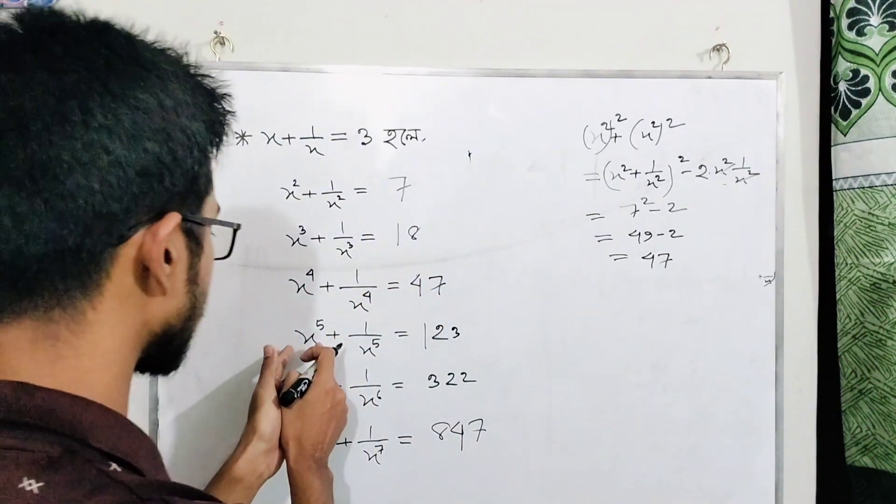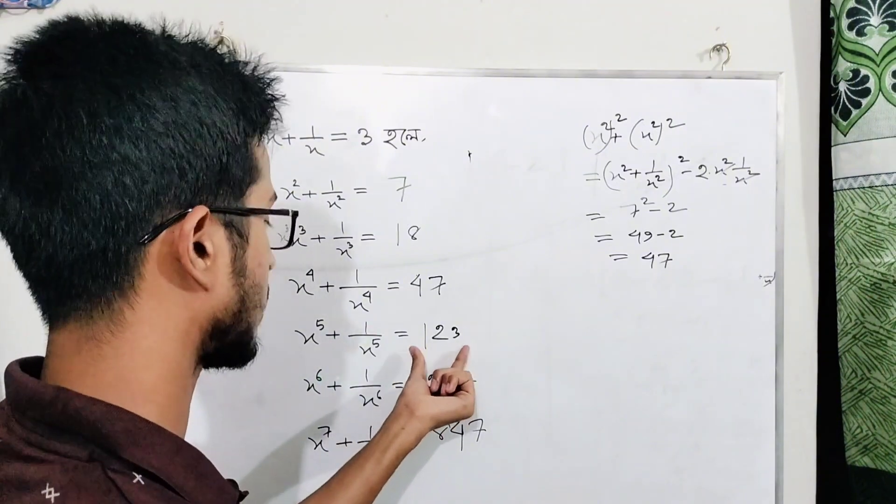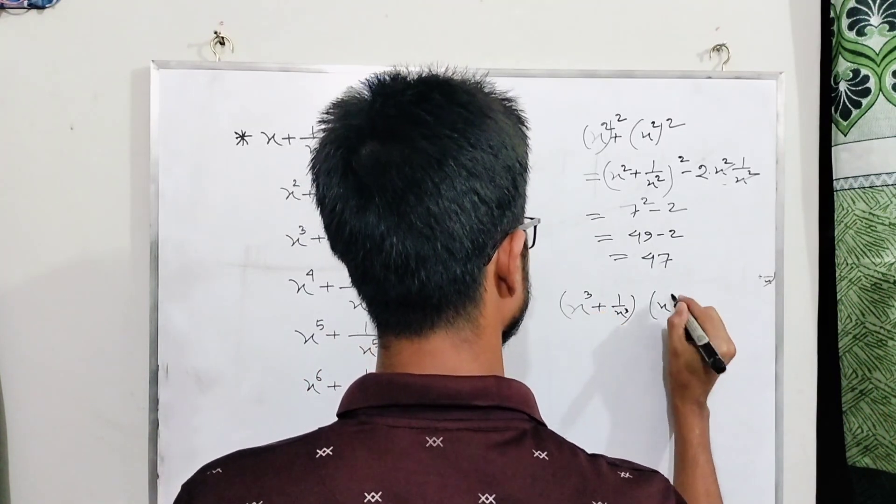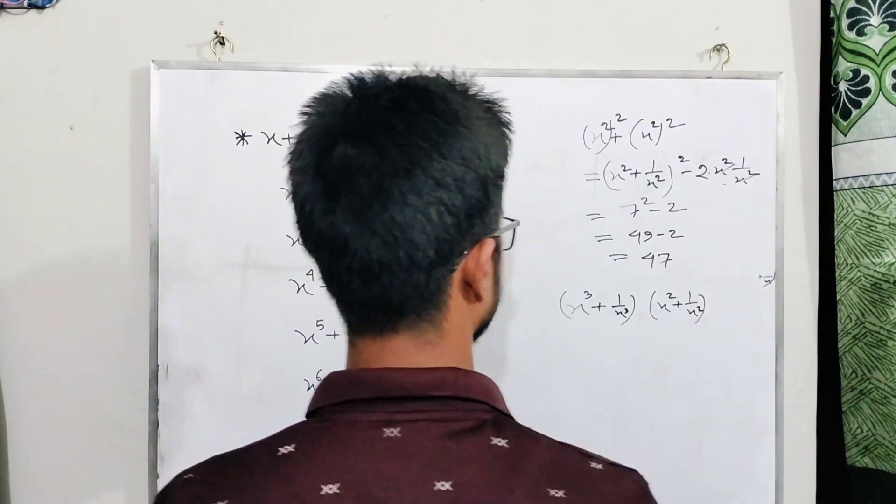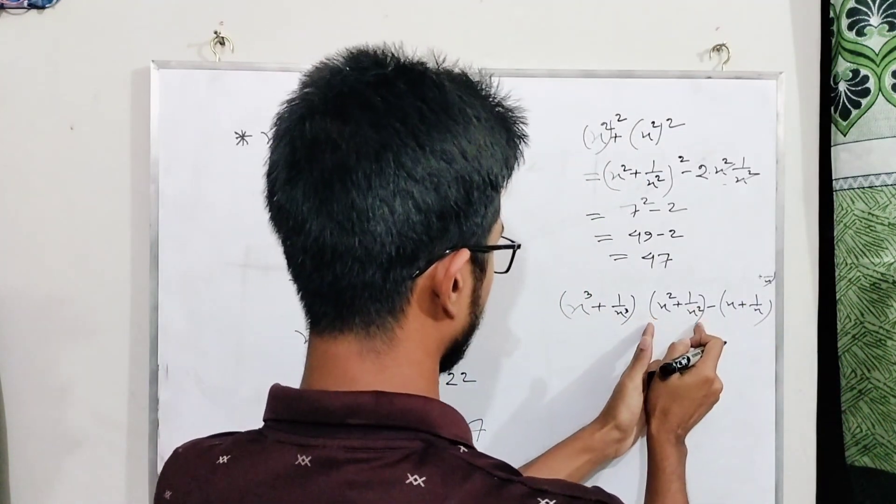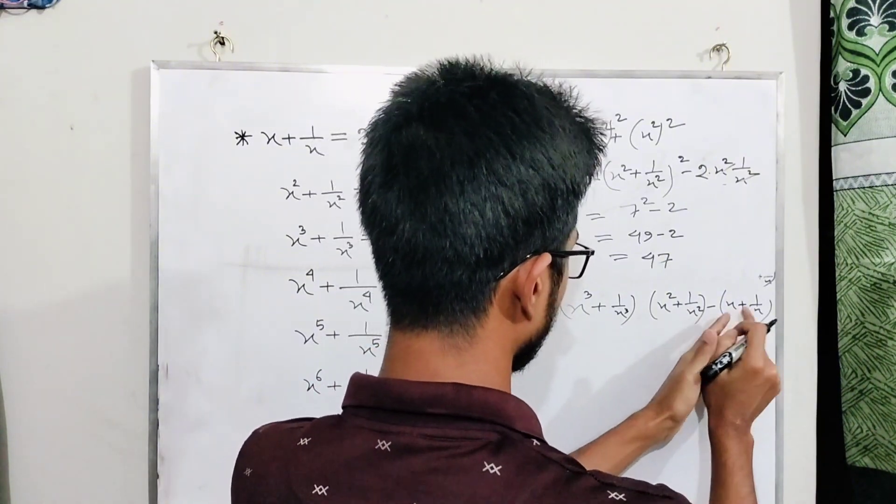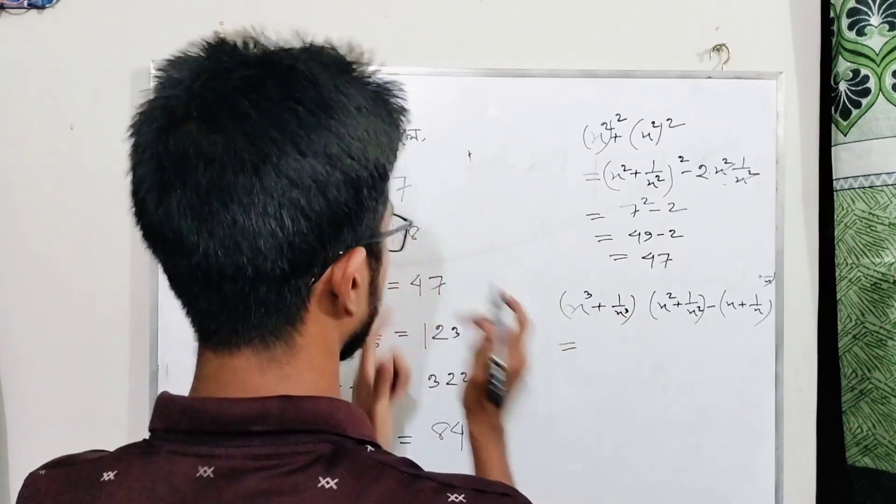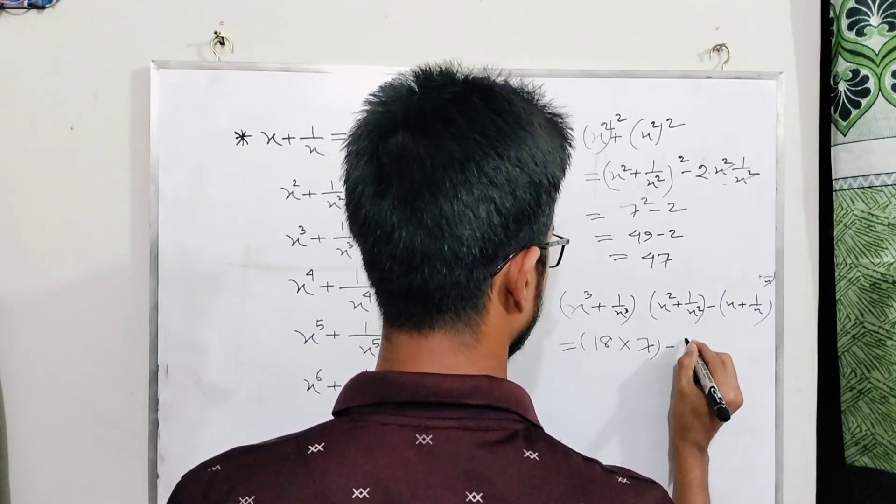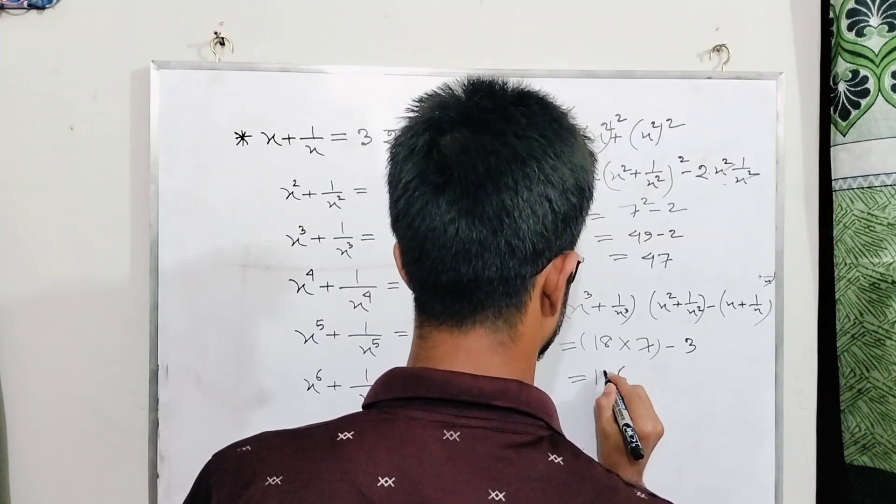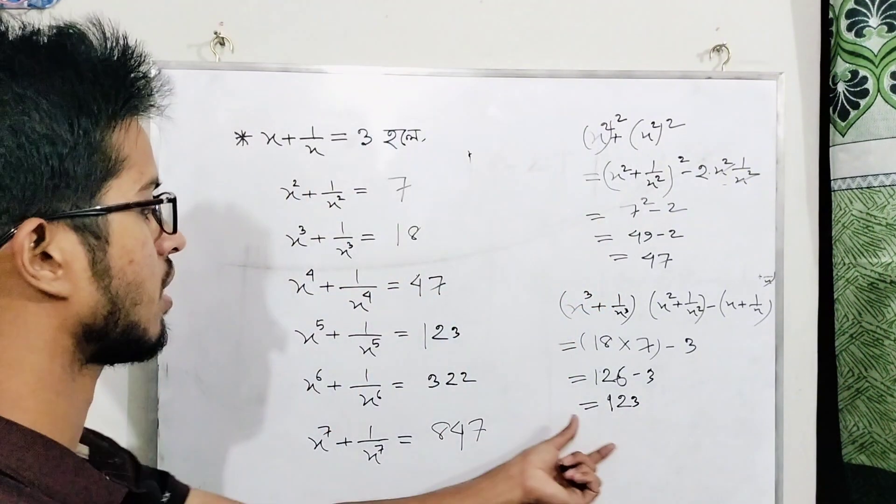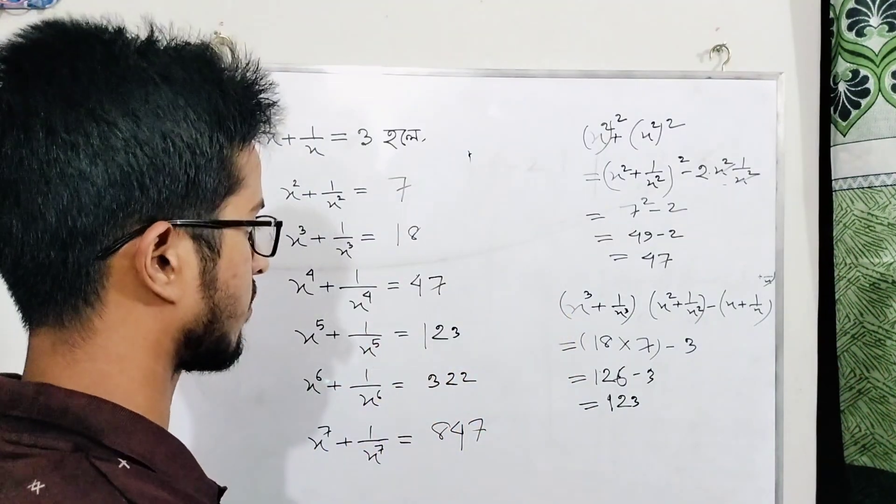For x to the power five plus one by x to the power five, we multiply (x cube plus one by x cube) times (x square plus one by x square) minus (x plus one by x). Using our previous results of eighteen times seven minus three, we get one hundred twenty-three.